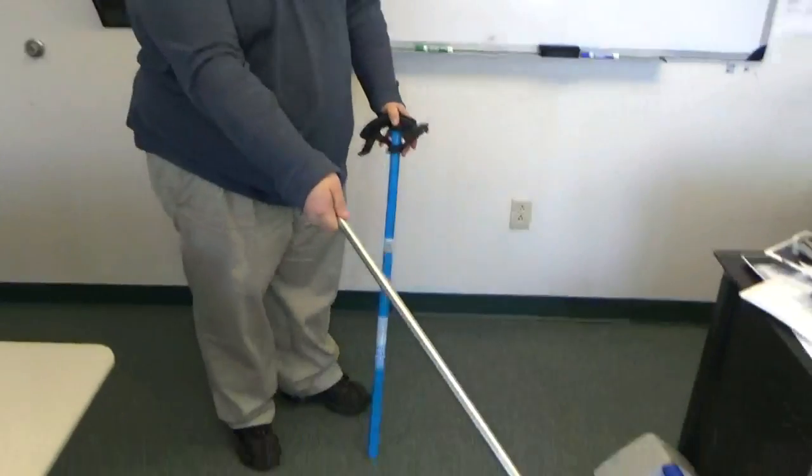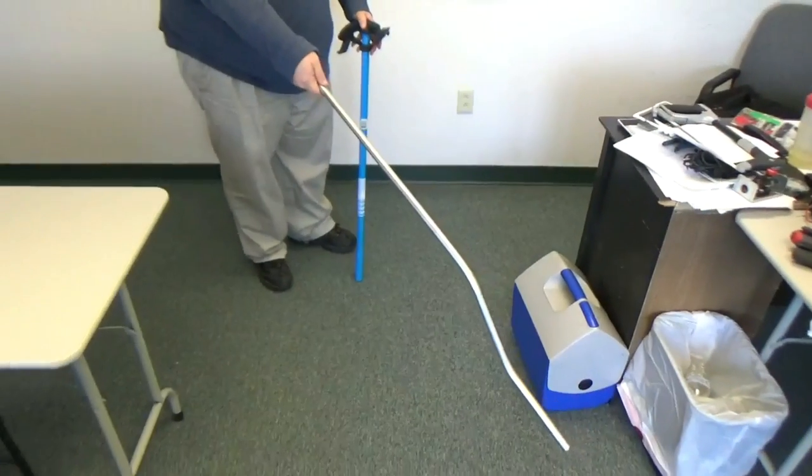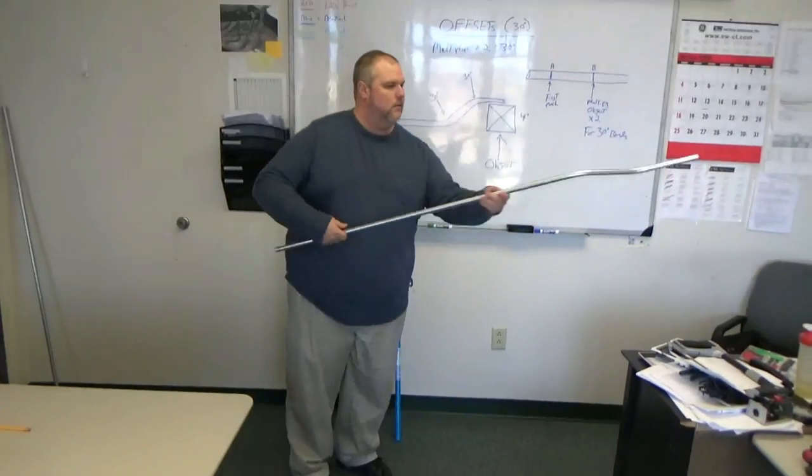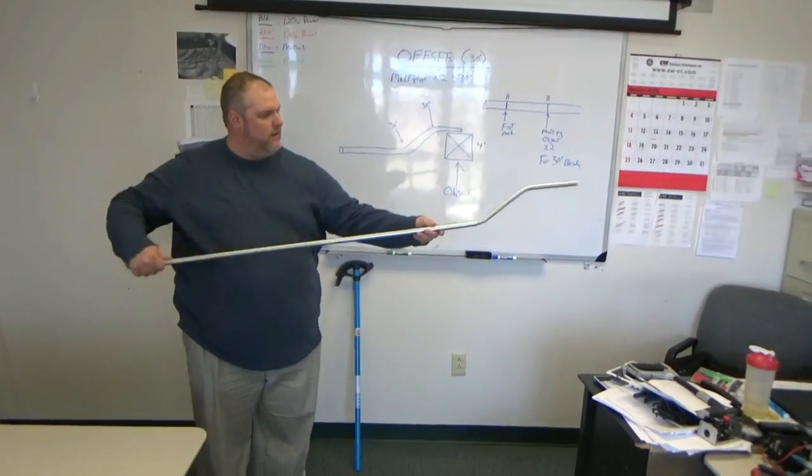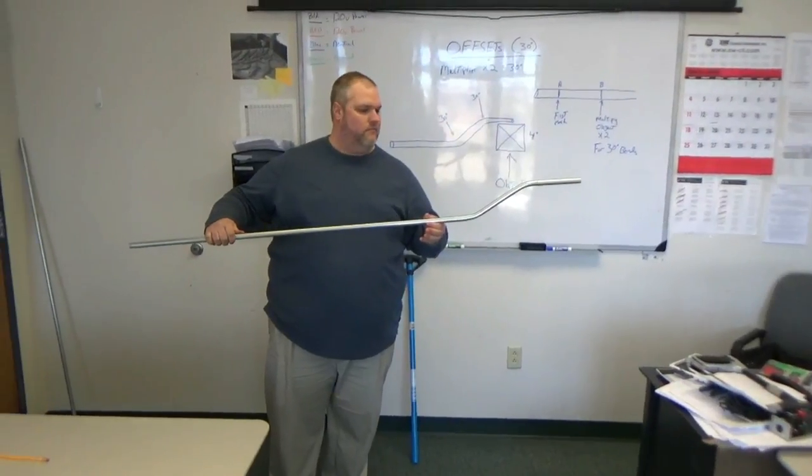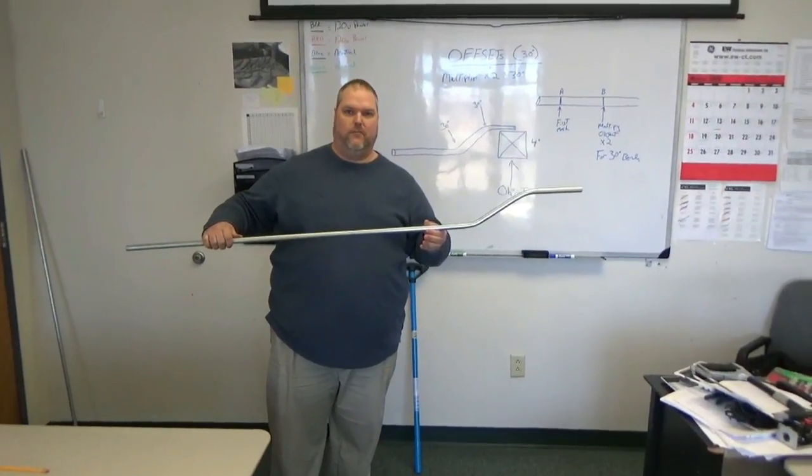Once we're done, we eyeball it. Make sure it's straight. We look at it, and that's how we bend a 30 degree offset going over a 4-inch obstruction.